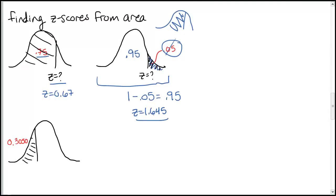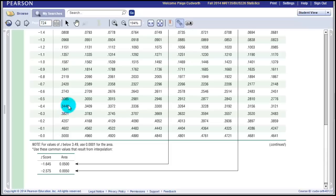Or if they only wanted two decimal places, we could round that to 1.65. Last one: 0.3050 is an area to the left, which means it is directly what we're looking for in the table. This is less than 50%, so we're expecting a negative z-score on the left-hand side. Looking up 0.3050 in the negative z-score chart, this corresponds to a z-score of negative 0.51.